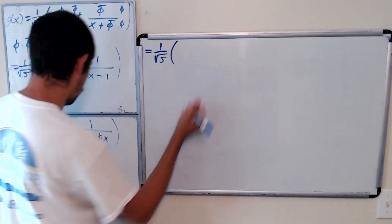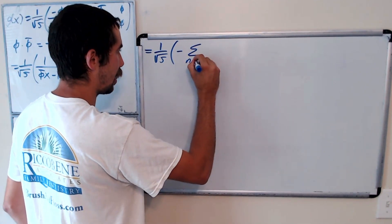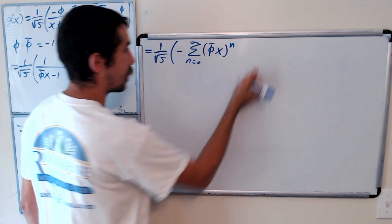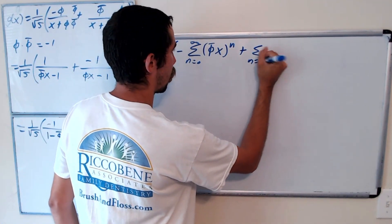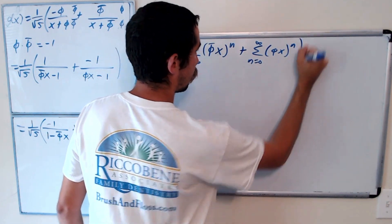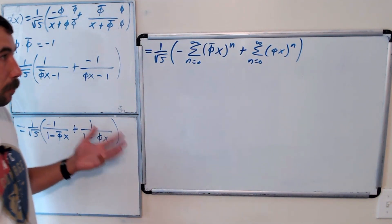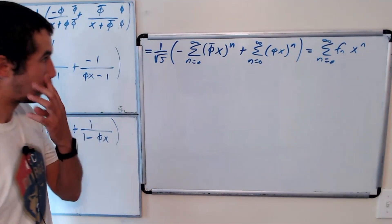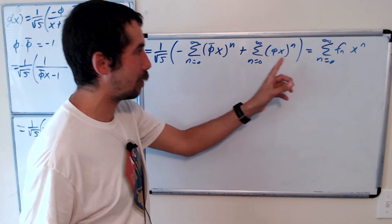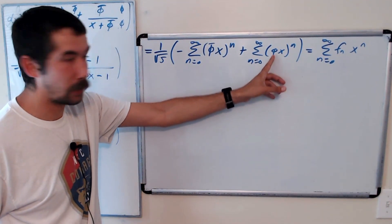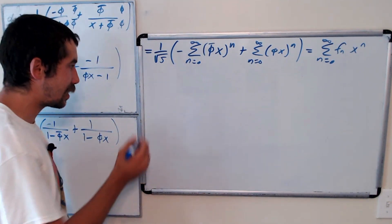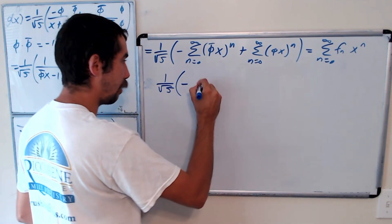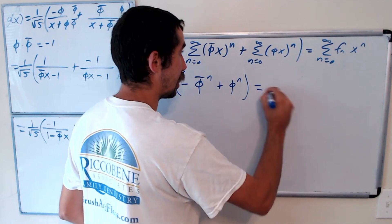So this equals 1 over root 5 times: negative the sum from n equals 0 to infinity of (phi-bar times x) to the n, plus the sum from n equals 0 to infinity of (phi times x) to the n. And this equals the sum from n equals 0 to infinity of f_n times x to the n. To find a formula for f_n, we just find the coefficient of x to the n on the left-hand side, which gives us 1 over root 5 times (negative phi-bar to the n plus phi to the n) equals f_n.